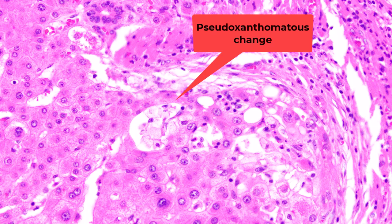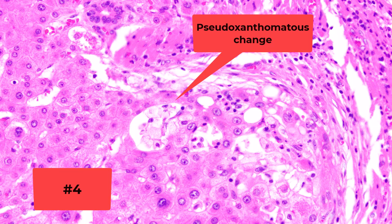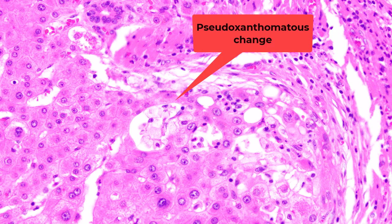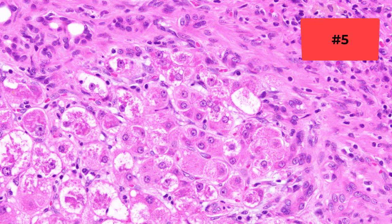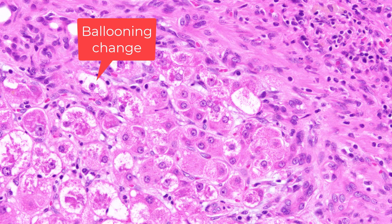Feature number four is foam cells at the interface — these are foamy histiocytes. The technical term often used is pseudoxanthematous change. Feature number five is ballooning change and Mallory hyaline production, again at the interface between the nodule and the septa.